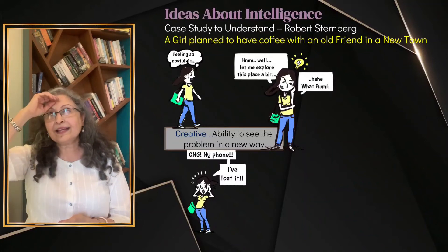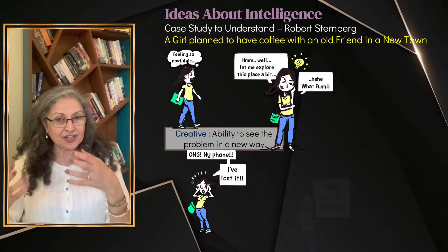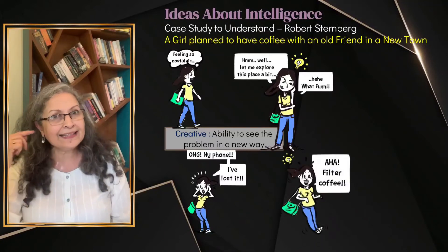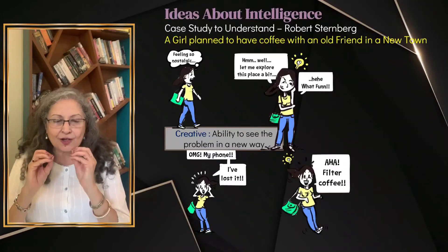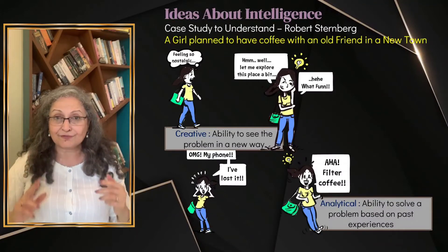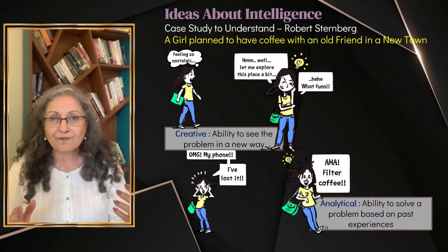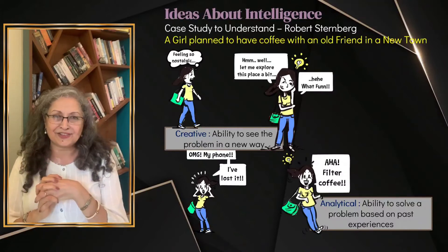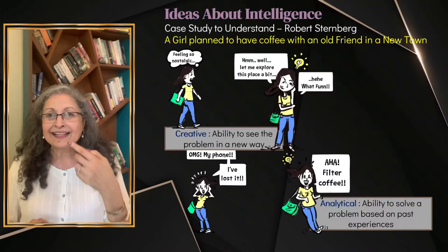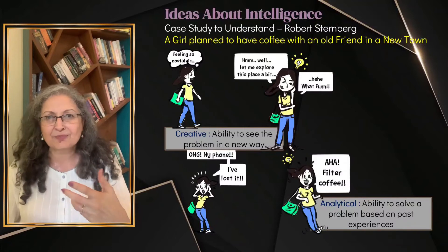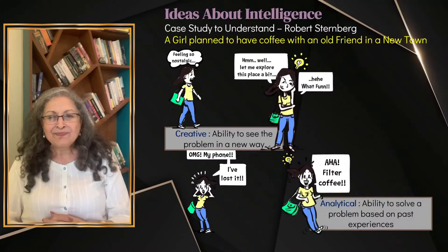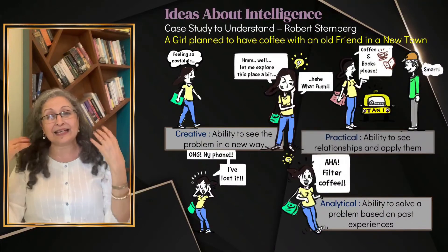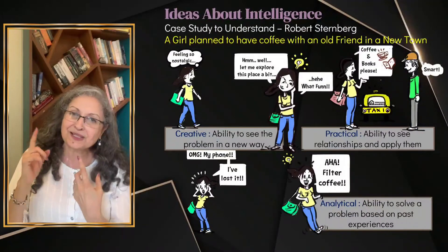Suddenly she remembers that she and her friend actually only liked filter coffee and nothing more than that. That's analytical ability — to solve a problem based on its parts. There is a problem: she's lost the phone, she needs to meet her friend for coffee. But now she remembers it's filter coffee, so she's narrowing down her search. She hails a taxi.